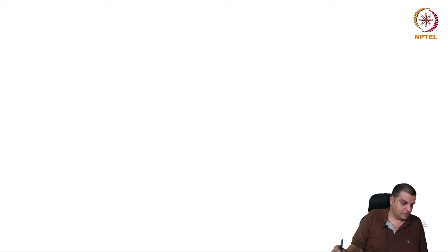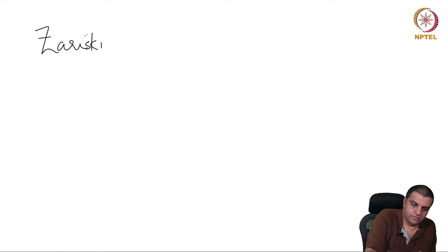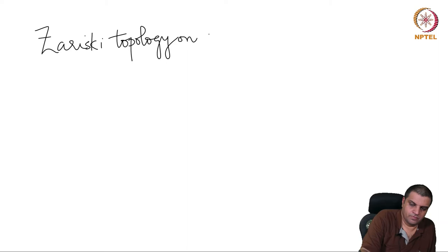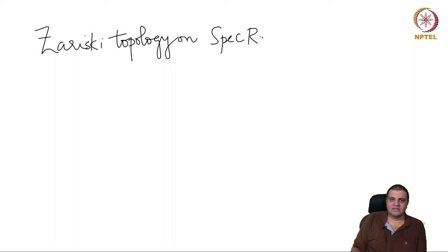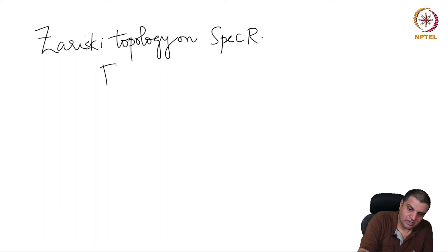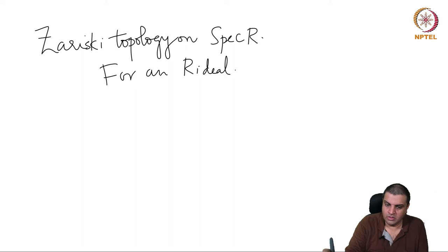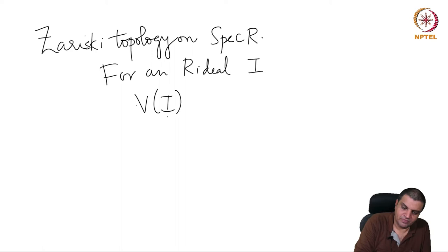This is called the Zariski topology. There will be a little abuse of terminology or notation now. We will write, for an R-ideal I, we will write V of I.